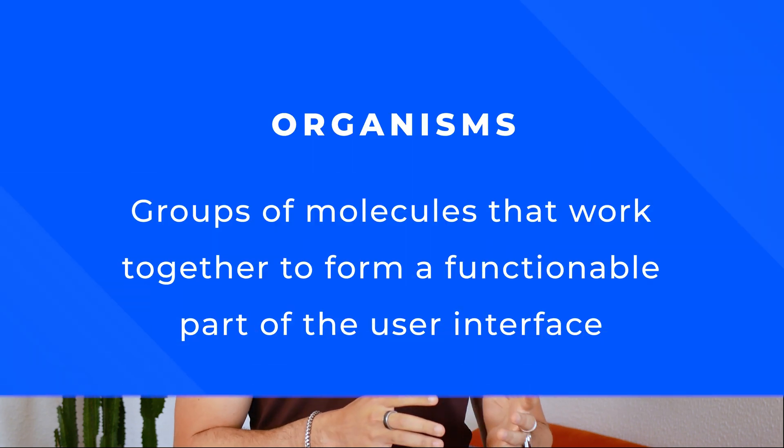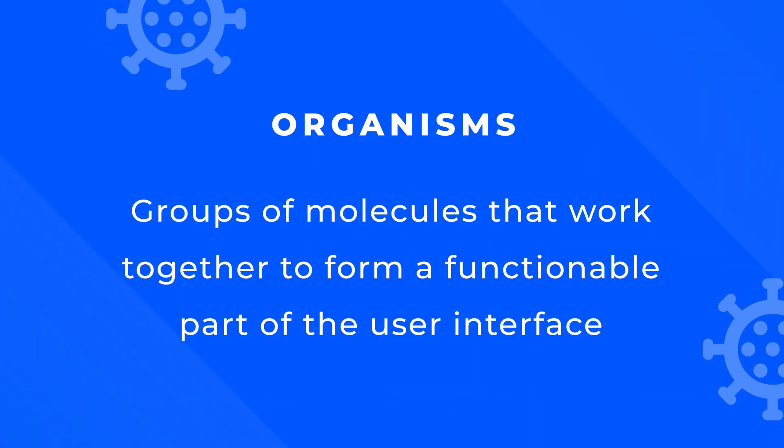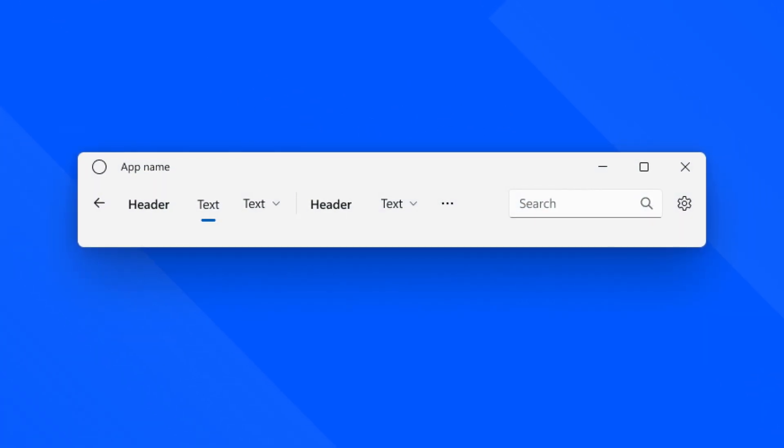The third principle is organisms. These are groups of molecules that work together to form a functional part of the user interface, like a navigation menu, for example, where we combine a bunch of buttons, icons, logos, and many others. By grouping these molecules together into one organism, designers can create larger and more complex components that are still modular and reusable.